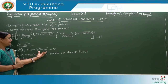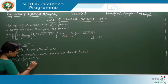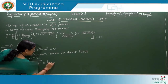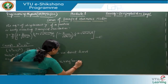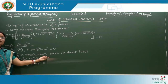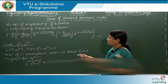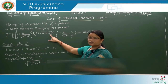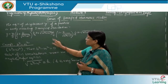Instead of considering b² − ω² = 0 directly, we consider √(b² − ω²) = h, where h is a negligibly small value. Since setting b² − ω² = 0 causes the solution to break down, we assume √(b² − ω²) = h, a very small quantity, and substitute this into equation 1.